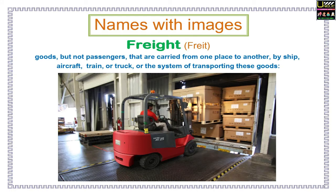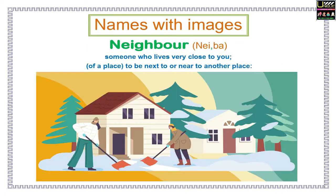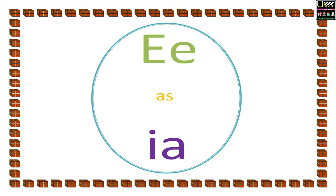E as in Names with images. Here I have a word with its pronunciation, explanation and an image for you. Freight: goods but not passengers that are carried from one place to another by ship, aircraft, train or truck, or the system of transporting these goods. Neighbor: someone who lives very close to you, or a place that is next or near to another place.